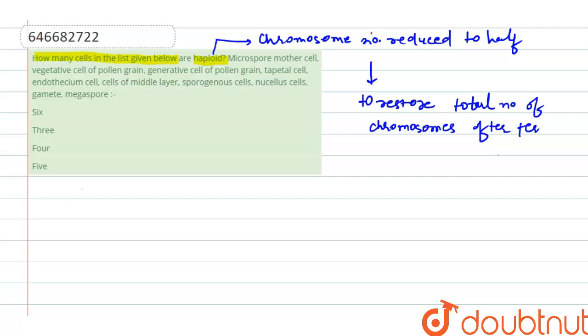We will move to our first option now. Our first option is microspore mother cells. Microspore mother cells are diploid. These are the cells from which a pollen grain is formed after meiosis, so they